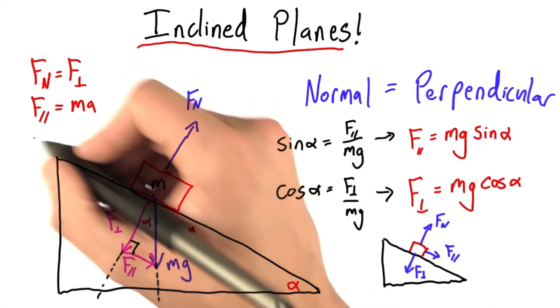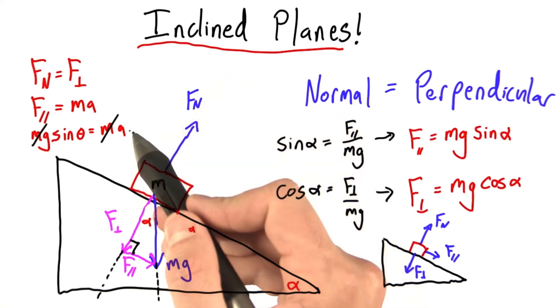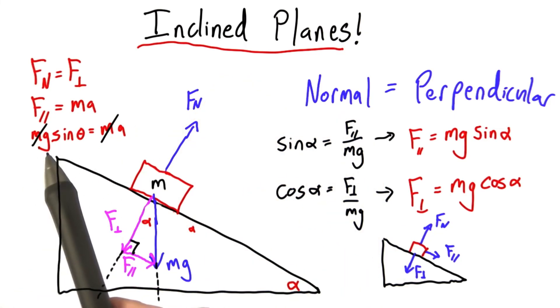Well, we can plug in what we know. F parallel is mg sine theta, so this must be true. And this tells me that the acceleration of an object sliding down an inclined plane is equal to g times the sine of theta.